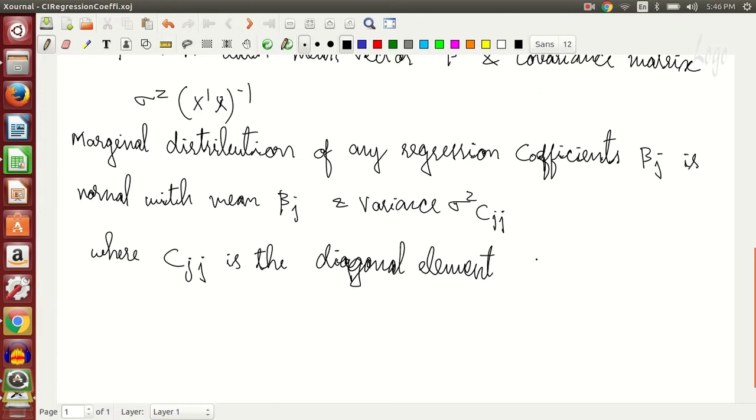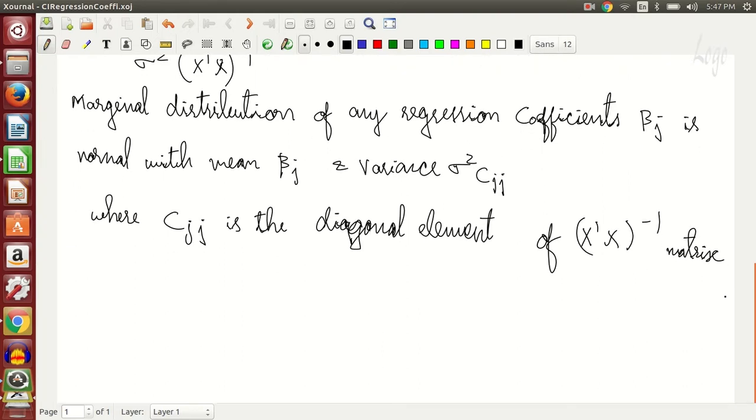C jj is a diagonal term of x transpose x inverse, which is one of the matrices which you encounter in the beta calculation. So consequently, you know that if you have the variance term, you can find a sampling distribution, which is given by the term that you are trying to estimate minus the observed term divided by the standard error.